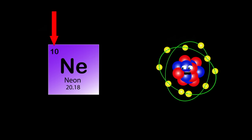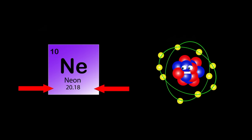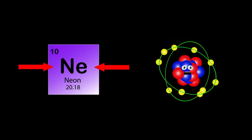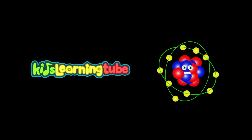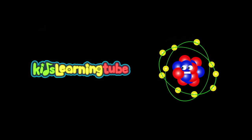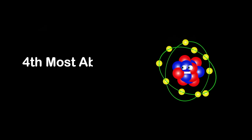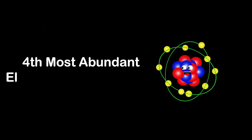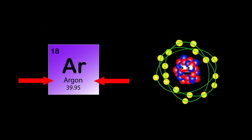Hi, I am Neon. My atomic number is 10, my atomic mass is 20, my symbol is Ne. Neon gas is used to promote things in advertising signs, and I'm the fourth most abundant element in the universe.